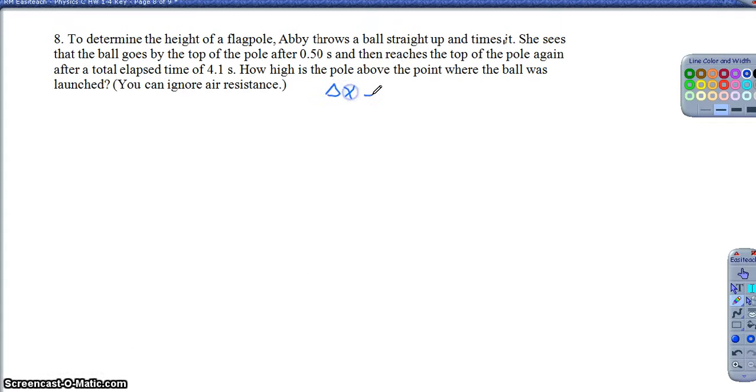The correct answer here for number 8 if you want to check it is about 10.0 or 10.045 meters. That's how tall the flagpole is. This one is a little bit maybe trickier than some of these questions but here's my flagpole, right? And then I take the ball, I throw it, it takes 0.5 seconds to reach the top and then after a total time of 4.1 seconds it's reached the height of the flagpole again. And that's the biggest piece here is just making sure you're comfortable understanding the concept.